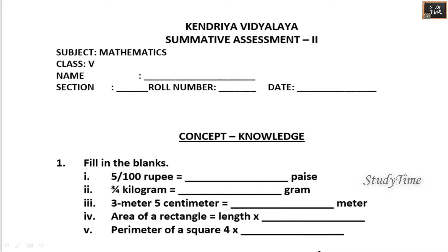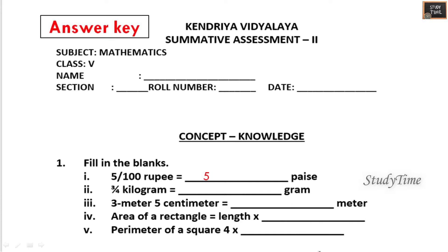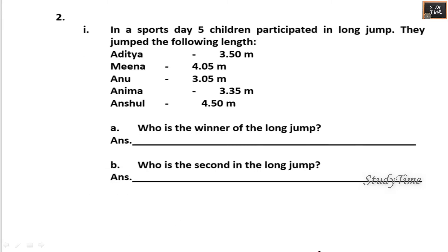First, filling in the blanks: 5 divided by 100 equals 5 paise; 3 by 4 kilogram is 750 grams; 3 meter 5 centimeter is 3.05 meter; area of a rectangle is length into breadth; perimeter of a square is 4 into the length of side.